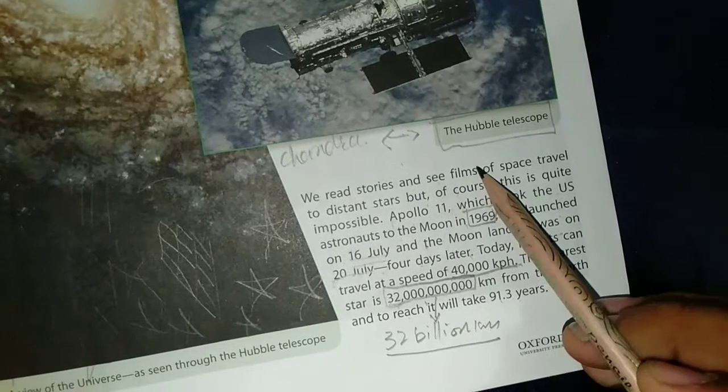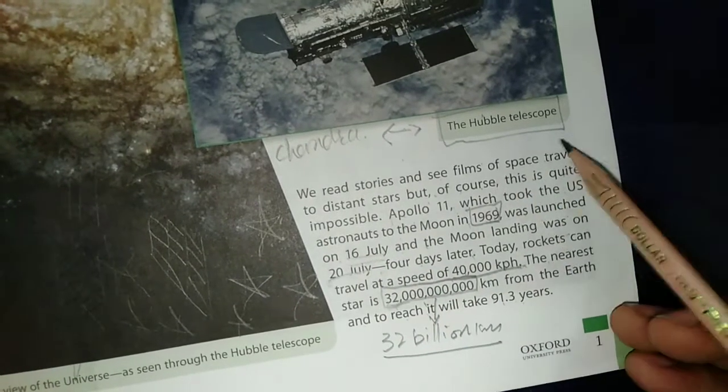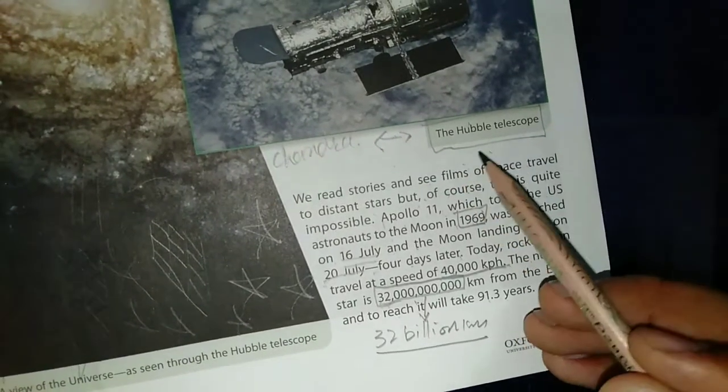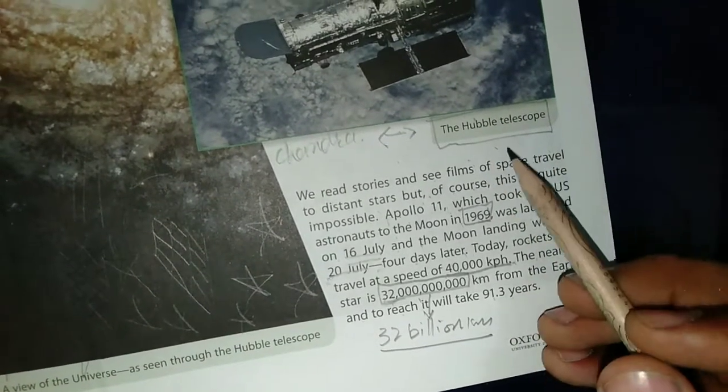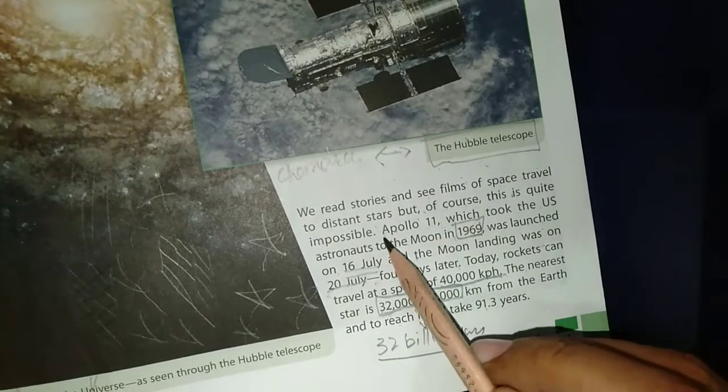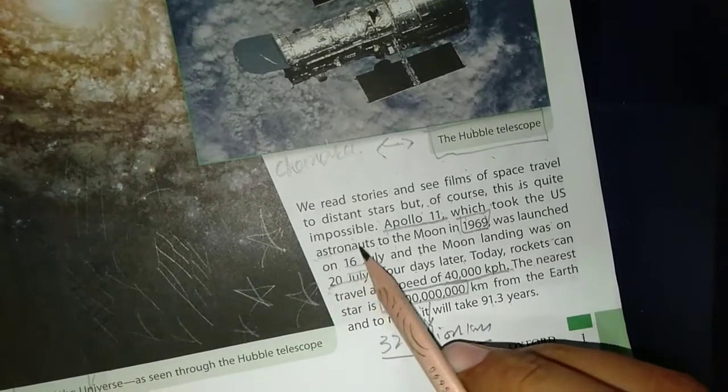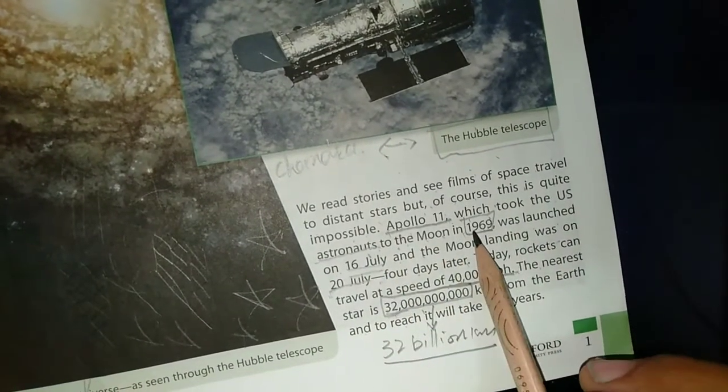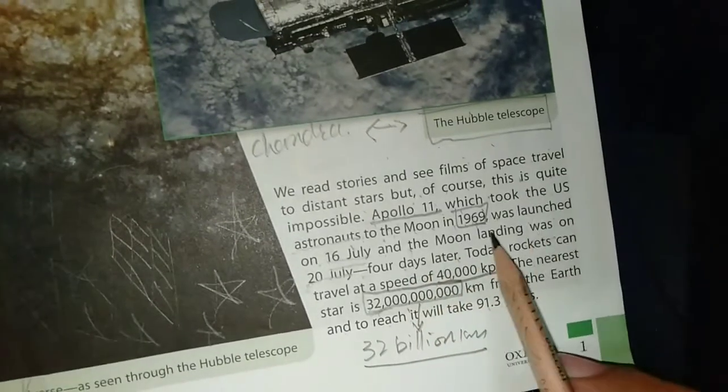We read stories and see films of space travel to distant stars. But of course, this is quite impossible. We have seen in cartoons and videos people moving on other planets and rockets. These are called sci-fi movies. Apollo 11, which took US astronauts to the Moon in 1969, was on 16 July and the Moon landing was on 20 July, four days later.